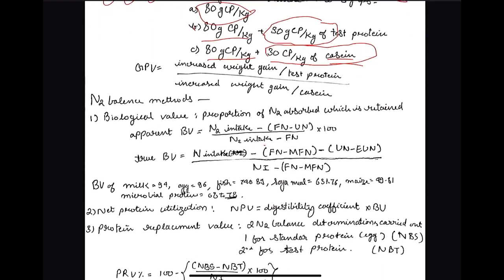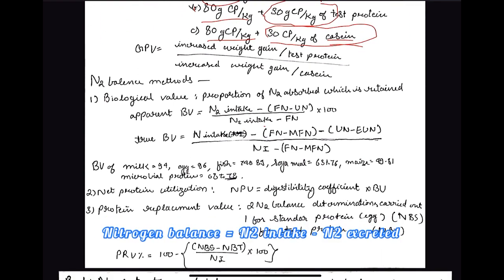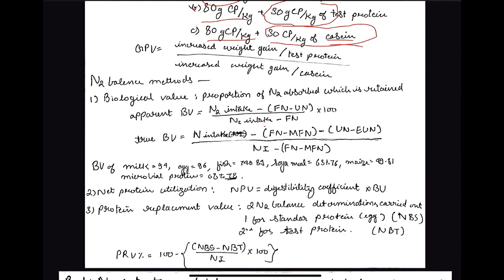Next we have the nitrogen balance method. Here we look at the nitrogen level in the feed given and the nitrogen level in all the excreta of the animal, to see how much nitrogen is retained in the animal body.